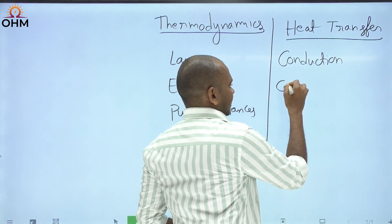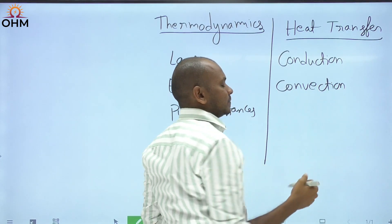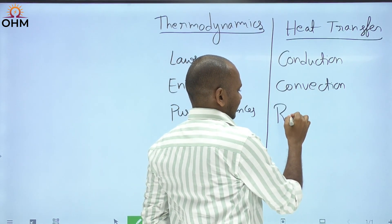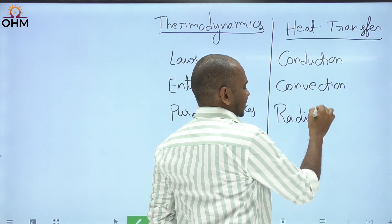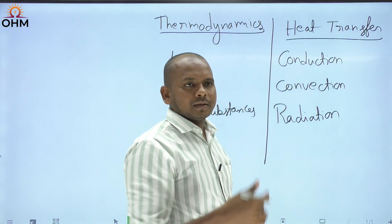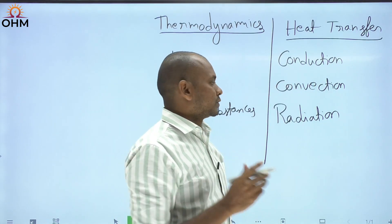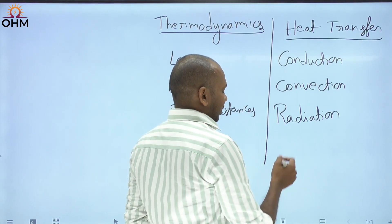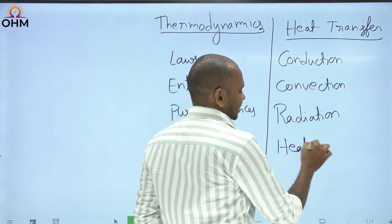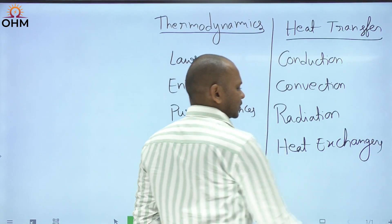The three modes are Conduction, Convection, and Radiation. Convection is when heat transfers between a fluid and a solid. Radiation is when heat transfers without a medium — for example, sunlight reaching the Earth does not require any medium, so that is called radiation. Apart from these three modes, one more major topic is Heat Exchangers, which we are also going to cover in Heat Transfer.